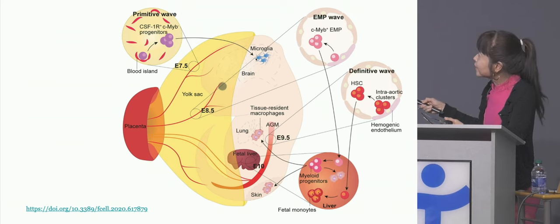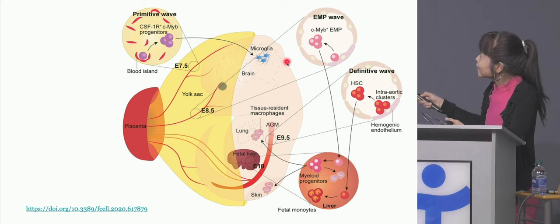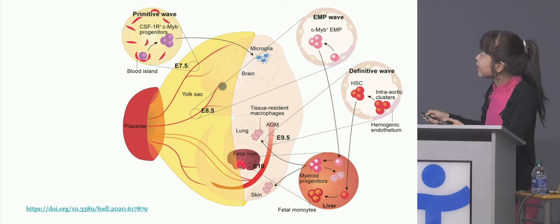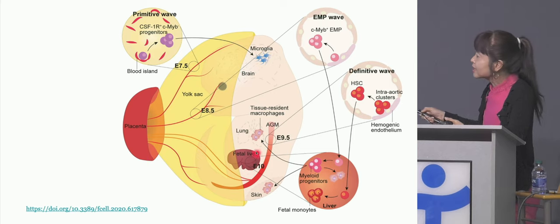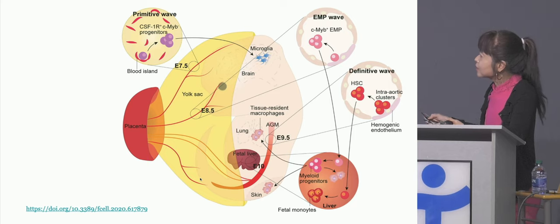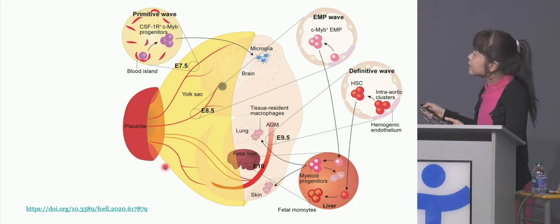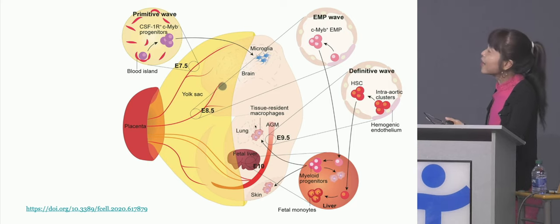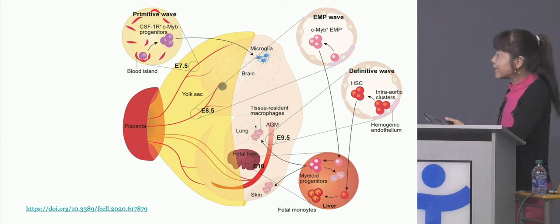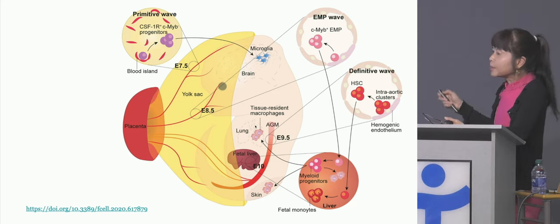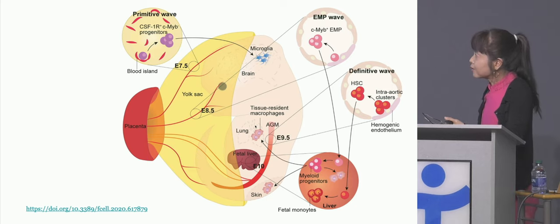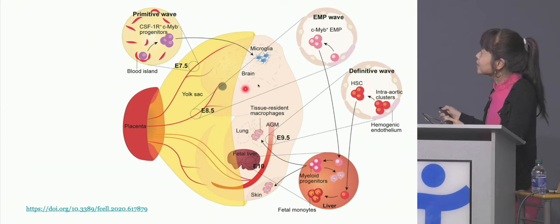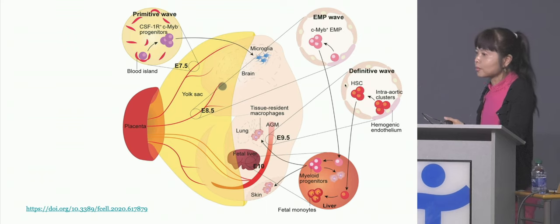A little bit later in development, there is a second wave of these myeloid progenitor cells that go to the fetal liver and seed the liver — and remember those Kupffer cells? That's another tissue-resident macrophage. Those start to develop in the liver, and then from the liver we send out these progenitor cells to other tissues — lung, kidney, skin — and these become tissue-resident macrophages. This is a very special subset, quite different from those that come from the bone marrow.